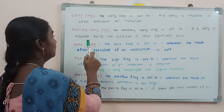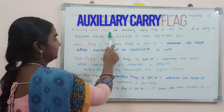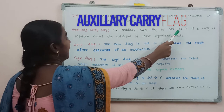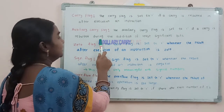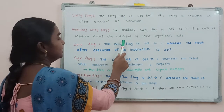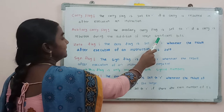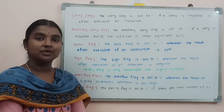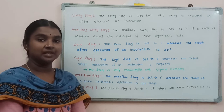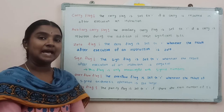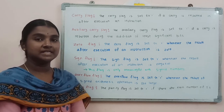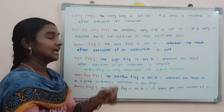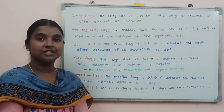The auxiliary carry flag is set to 1 if a carry results during the addition of the least significant bits. So if we are doing an addition operation and get a carry from the internal least significant bits, this auxiliary carry flag is going to be set to 1.